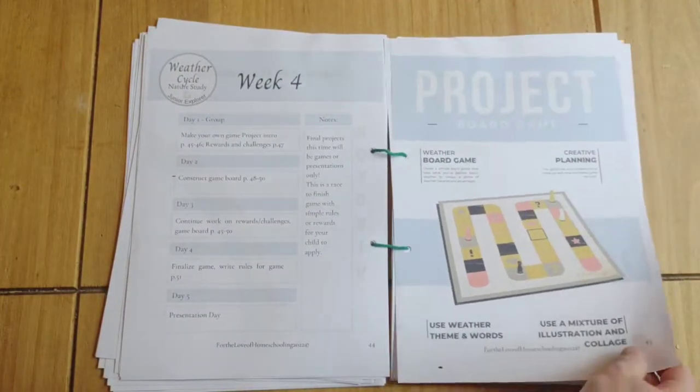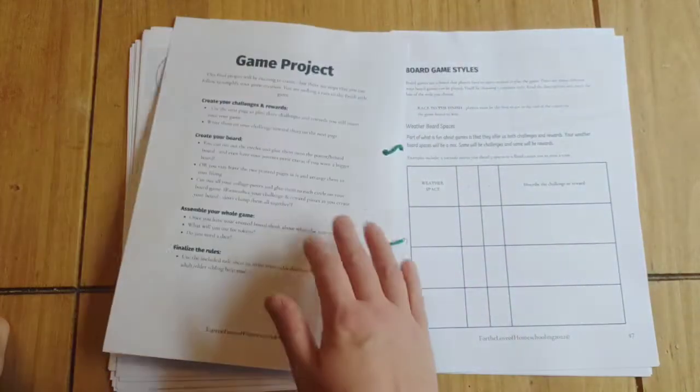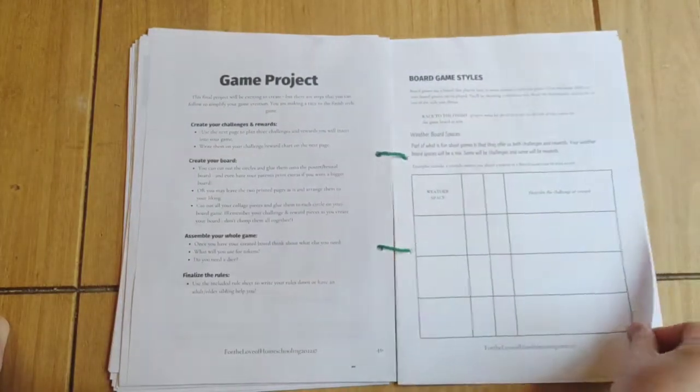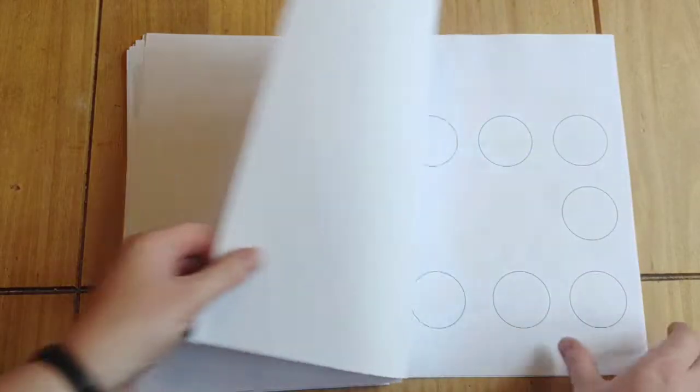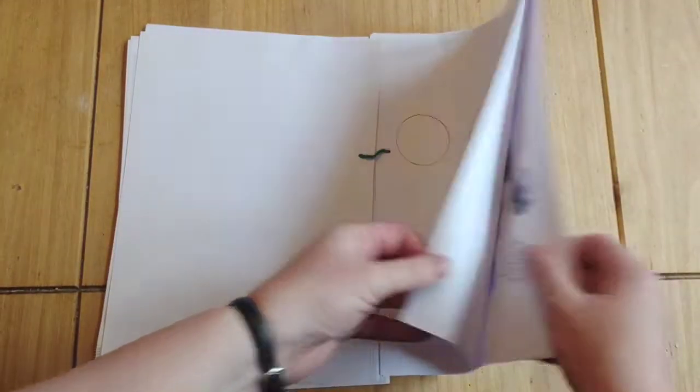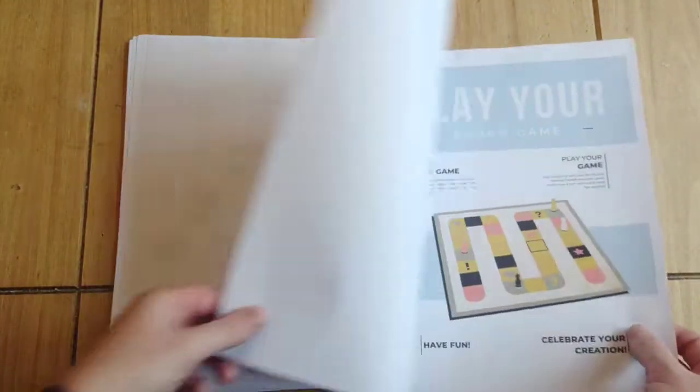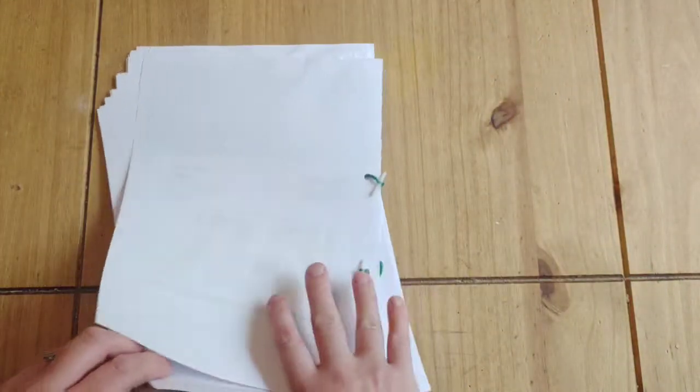The project for juniors is to make their own weather board game. It gives them some tips on doing this, some things to make into counters, some bits of weather things to cut out, and somewhere to write down the rules, and then we'd play the game.